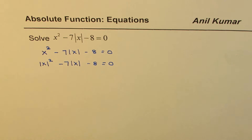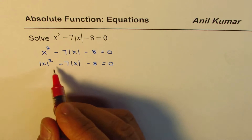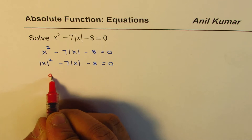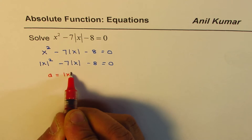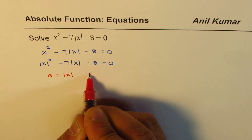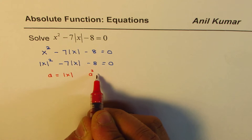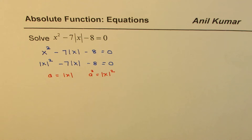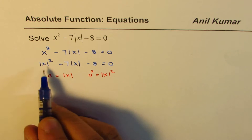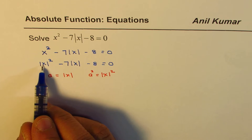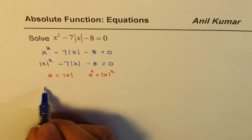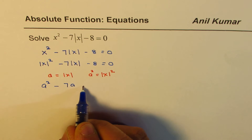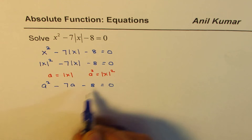Now, we can make a substitution. We can substitute, let's say, some variable a equals to absolute x. In that case, a squared will be equals to absolute x whole squared. So, let's make this substitution. Absolute x squared becomes a squared, so we could write this as a squared minus 7a minus 8 equals to 0.